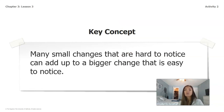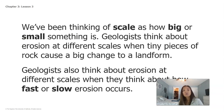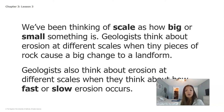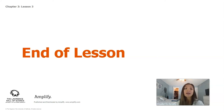The key concept we've learned from this chapter is that many small changes that are hard to notice can add up to a bigger change that is easy to notice. We've also been thinking about scale as how big or small something is. Geologists think about erosion at different scales — when tiny pieces of rock cause a big change to a landform, and also when they think about how fast or slow erosion occurs. That is the end of lesson three, and we will see you back for our very last lesson for this chapter.